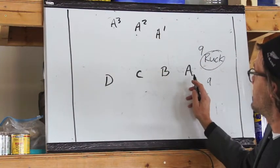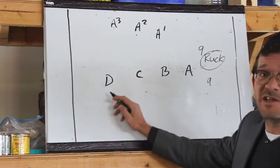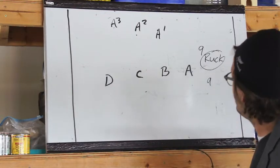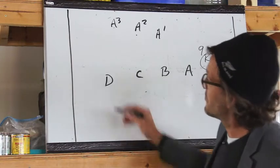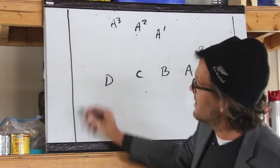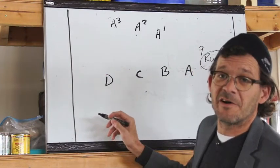We have our line here, A, B, C, D, and then we have our nine over here. Essentially what we're doing is we're utilizing this sideline as another defender on the field.